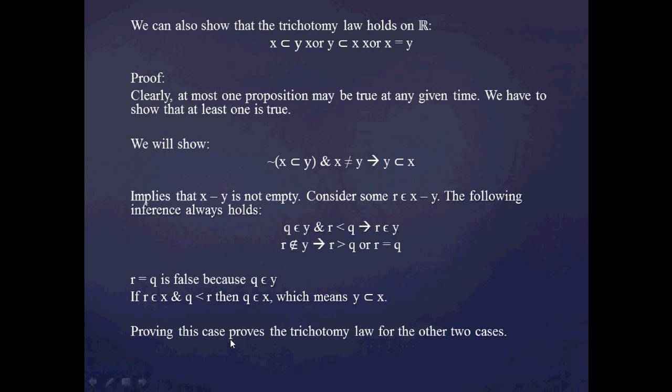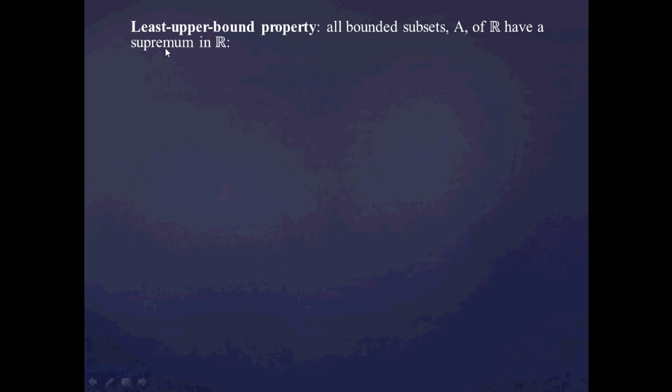As noted before, proving this particular case proves the trichotomy law for the other cases: assuming the negation of any two of the three propositions implies the truth of the third. The last thing I'm going to prove in this video is the least upper bound property of the real numbers — the property that the rational numbers by themselves didn't have. It's going to turn out that any bounded subset A of the real numbers has a least upper bound — a supremum — which is itself a real number.